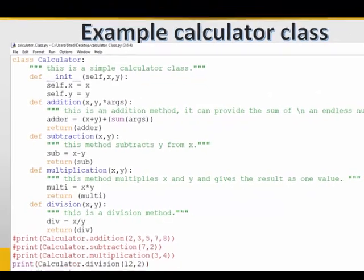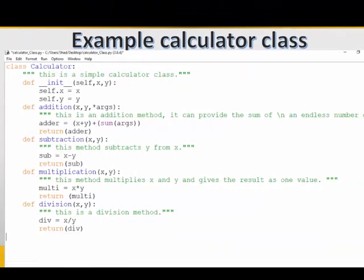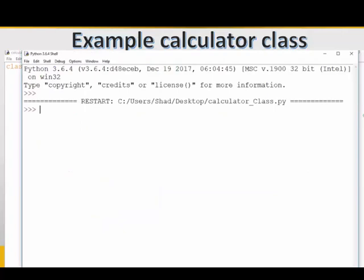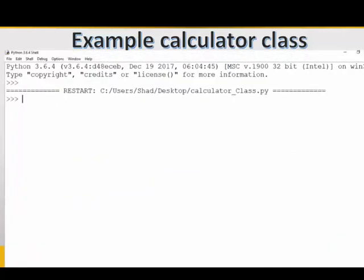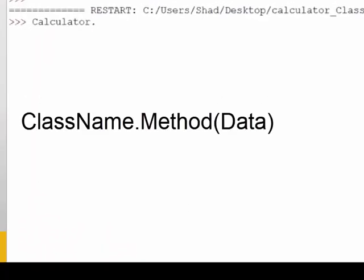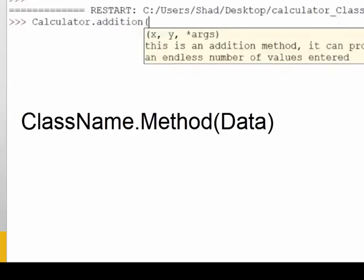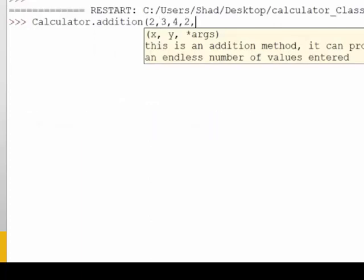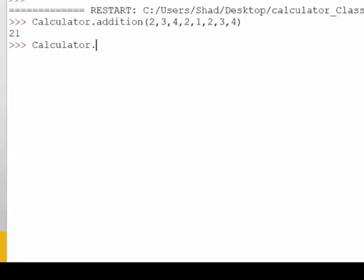So that's how you create a class and get the outputs from a class. You can get the outputs from the interpreter by calling the class. You write down the name of the class dot the name of the method that you want to use from the class. Let's say addition and in between parentheses you pass values or variables that have values in them. So we pass several numbers. Here we use random numbers just to get output from it. So the sum of those values were 21.